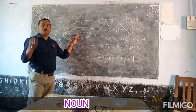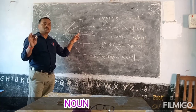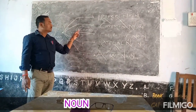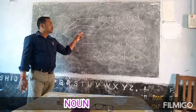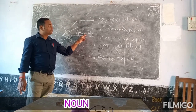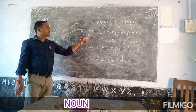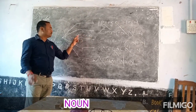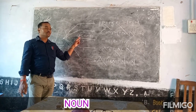P stands for proper noun, C for common noun, C for collective noun, M for material noun, and N for abstract noun. Once again: P, C, C, M, N.